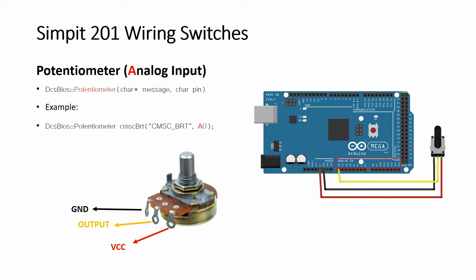For wiring analog inputs — potentiometers — besides the ground, the middle wiper pin goes to one of the analog pins A0 to A15, and then you need the 5V power. If you get the direction wrong you can just reverse the order.